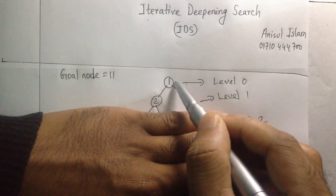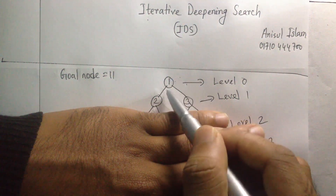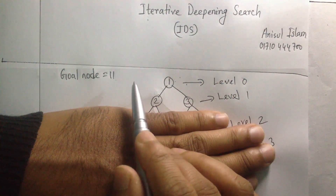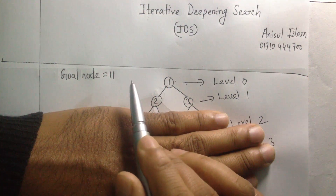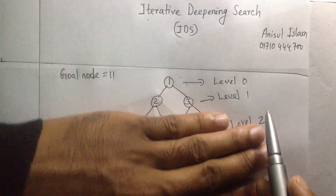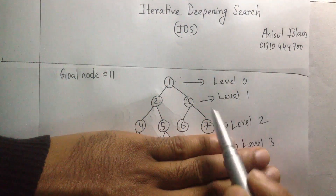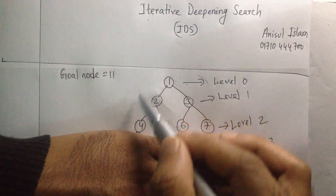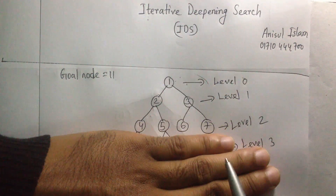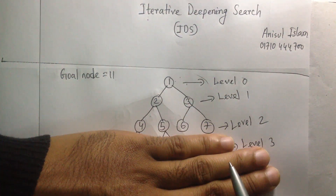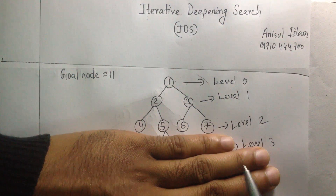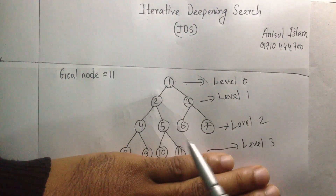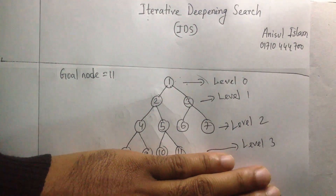You start with the root node, go left, then go right. If you find the goal node you stop; if not, increase the level again — from level 0 up to level 2 — and use DFS again. If you still don't find the goal node, go to level 3 and once again start from the root node and visit all the nodes using DFS.